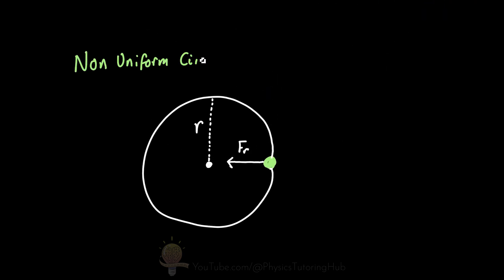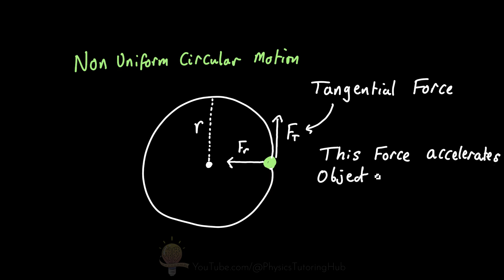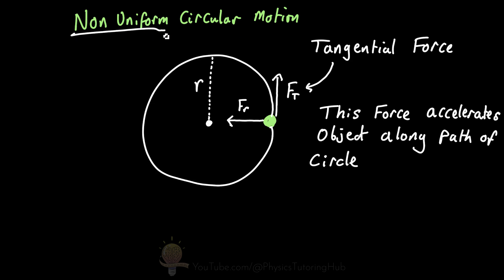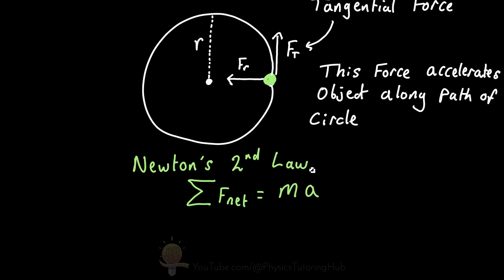In non-uniform circular motion, the object also has a tangential force acting on it, because the object has an acceleration along the path of the circle. Think of a car accelerating around a roundabout — the force the tires exert on the road causes acceleration. The relationship between this force and acceleration is described by Newton's second law: the sum of all net external forces equals the object's mass multiplied by its acceleration.